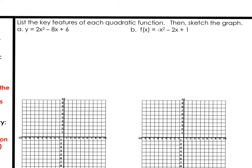It says: list the key features of each quadratic function, then sketch the graph. The key features are those four steps: state the vertex, the axis of symmetry, the y-intercept, and then find a reflecting point. First thing we're going to do is find the vertex. I want to make sure we're clear on what the coefficients are: a equals 2, b equals negative 8, and c equals positive 6.